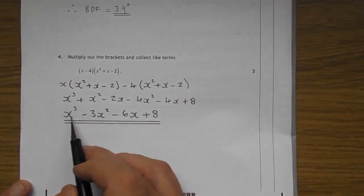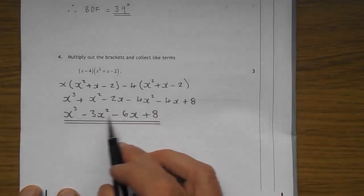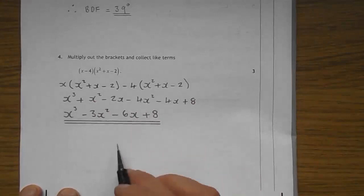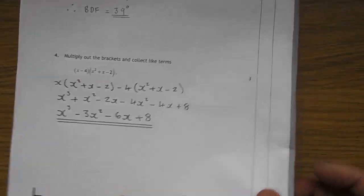A wee bit of tidying up to do. X cubed. Nothing else involving X cubed. So, that's just written. X squared plus X squared. Take away 4X squared. Take away 3X squared. Take 2X. Take 4X. Take 6X. And you have the term independent of X. Or the number, as we call it. Plus 8 at the end.